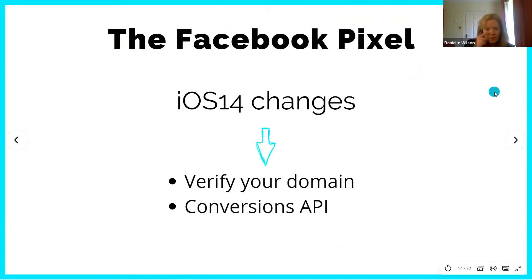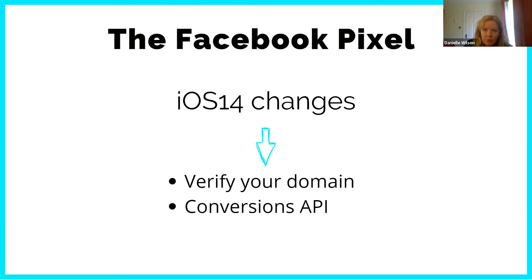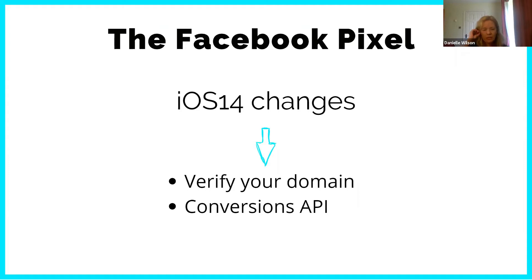There is a bit of a spanner in the works at the moment — the new Apple operating software iOS 14 is bringing in an option where a pop-up will appear when people visit websites and apps, allowing them to say their data is being tracked and opt out of it. If they do that, it's going to make things more difficult for the pixel to get information back to Facebook. While this isn't everybody, it is going to affect a huge number of people. However, Facebook have been working on ways around this issue.